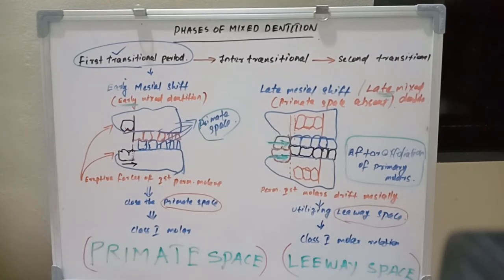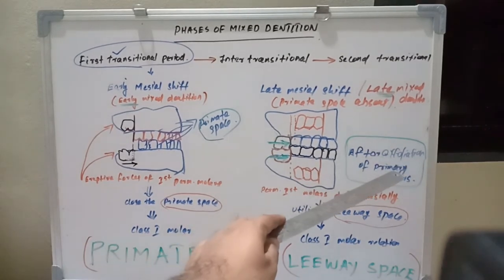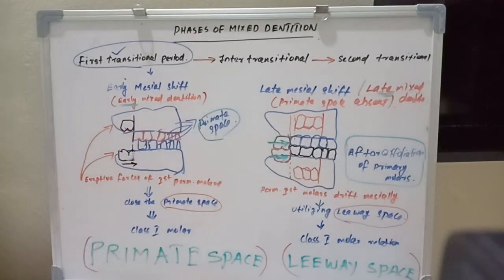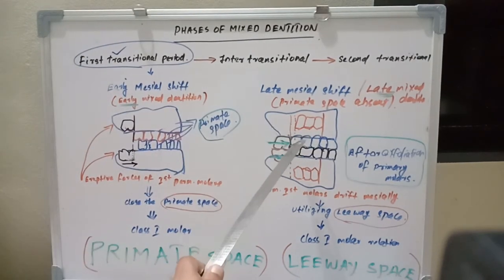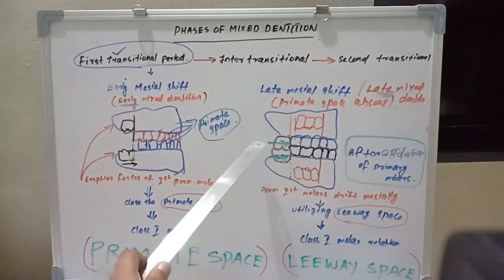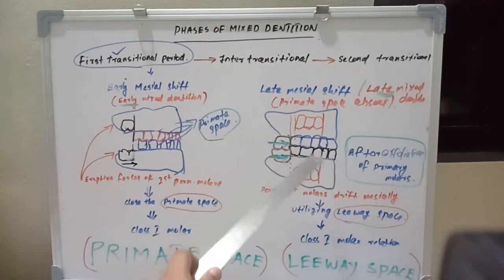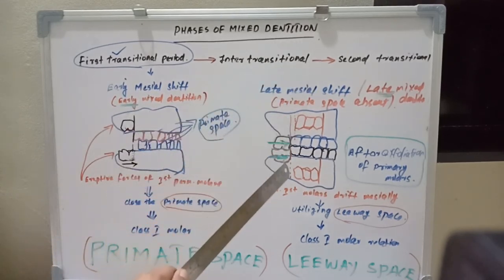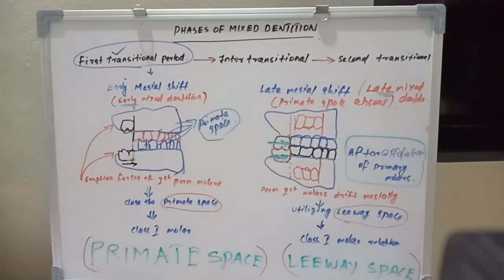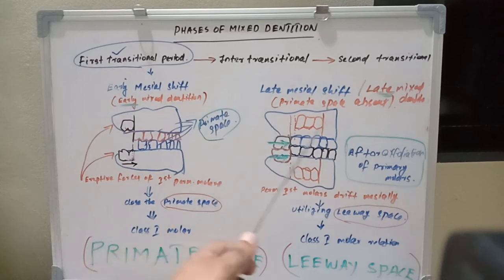This leeway space is utilized only after the exfoliation of the primary molars, which usually occurs during ages 10 to 12 years. Once these teeth are exfoliated, the permanent first molars drift mesially — you can see the arrow marks — they drift mesially, utilize the leeway space, and reach Class 1 molar relation. So early mesial shift utilizes the primate space at 6 to 7 years, while late mesial shift utilizes the leeway space at 10 to 12 years.